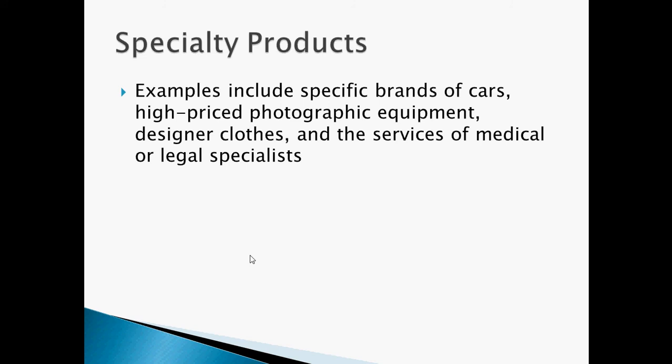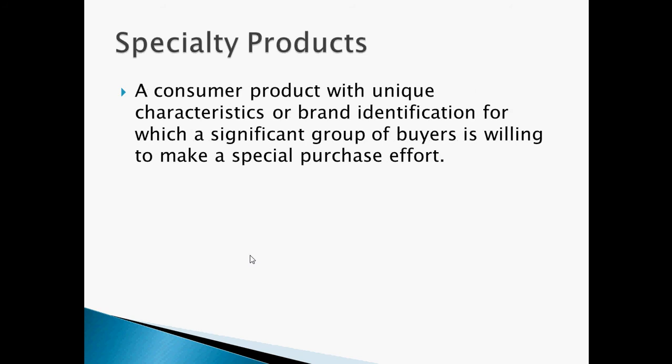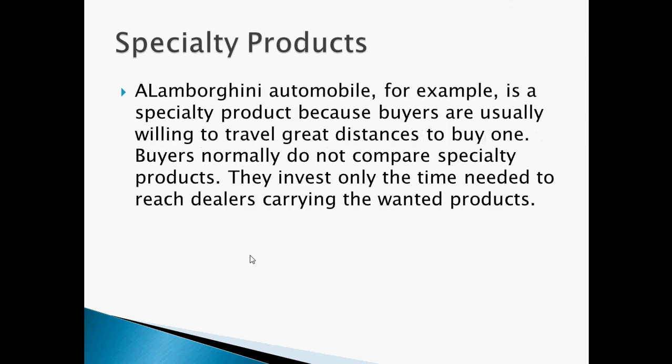Examples of specialty products include specific brands of cars, high-priced photographic equipment, designer clothes, and the services of medical or legal specialists. A BMW could be a specialty product because it has unique characteristics or brand identification for which a significant group of buyers is willing to make a special purchase effort. A Lamborghini, for example, is a specialty product because buyers are usually willing to travel great distances to buy one.